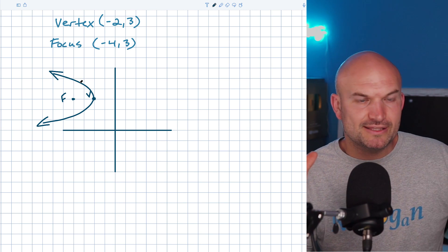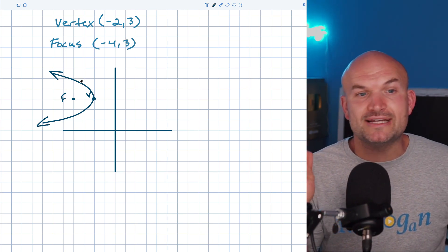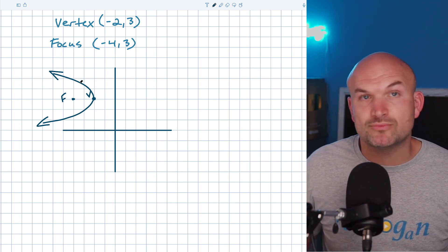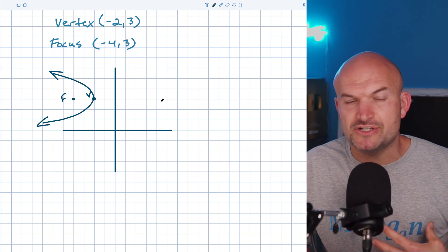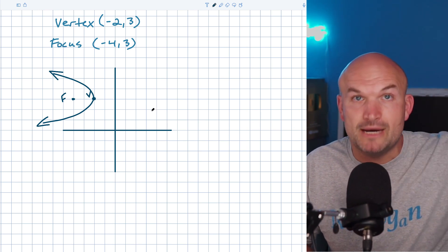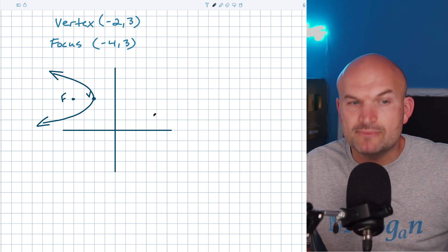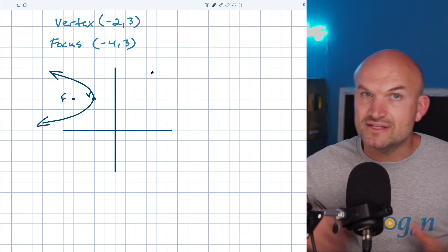Before we get into the importance of it opening up to the left, the main important thing I want you to understand is this is what we call a horizontal parabola. So therefore we need to use a special equation. When you're studying quadratics, you remember that was a vertical parabola, either opened up or opened down. And what was important about that was the X was squared. So if we're going to be dealing with a horizontal parabola, we can now say that our Y is going to be squared.